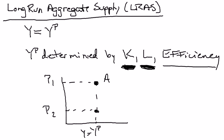So we're at point B. Two points will determine a line — I'll connect those two points and that's my long-run aggregate supply curve. The long-run aggregate supply curve we tend to think of as vertical at potential output. In the long-run equilibrium, the economy is going to be somewhere on the long-run aggregate supply curve, which means in the long run output is going to be equal to potential.